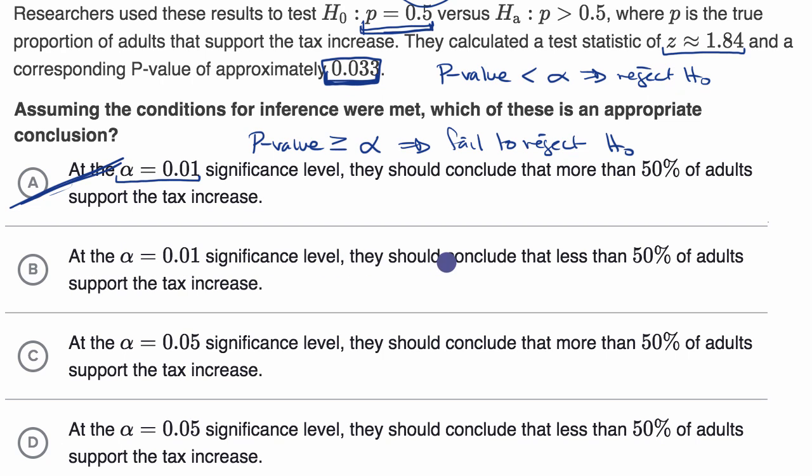At that same significance level, they should conclude that less than 50% of adults support the tax increase. No, we can't say that either. We just failed to reject this null hypothesis, that the true proportion is 50%.